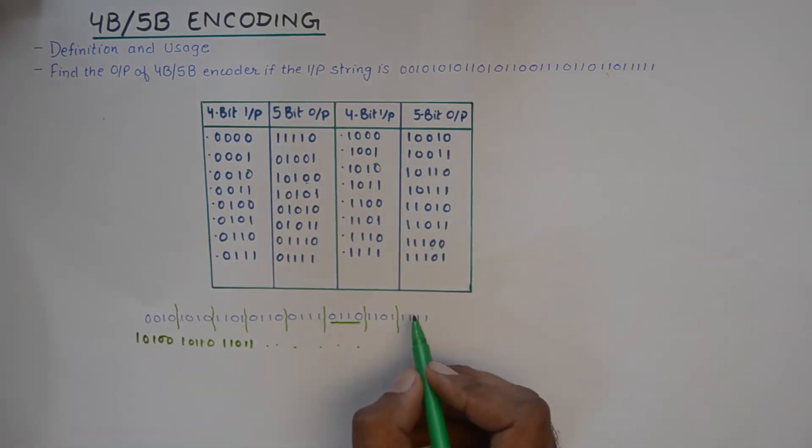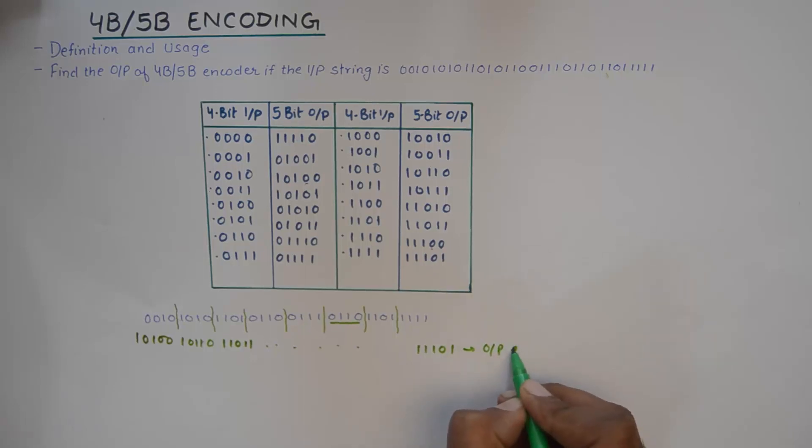written here. And 1111 is 11101. So this becomes the output encoded string.